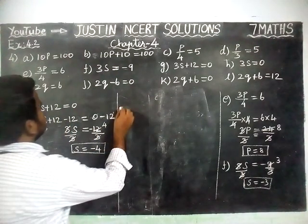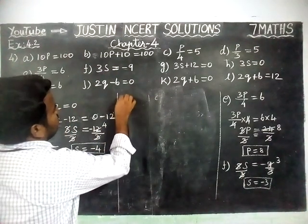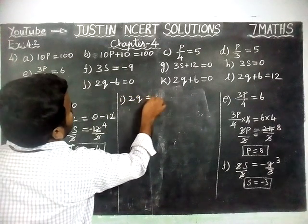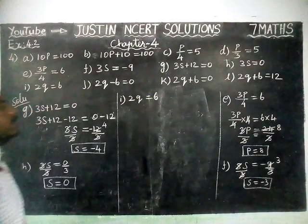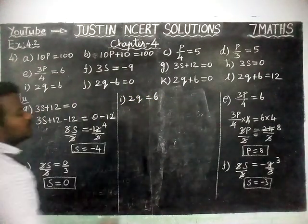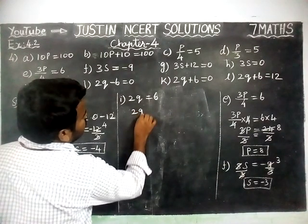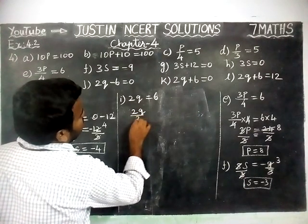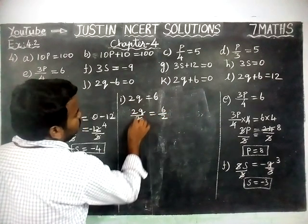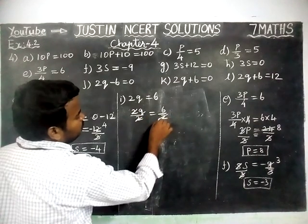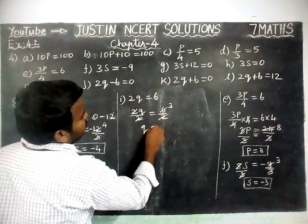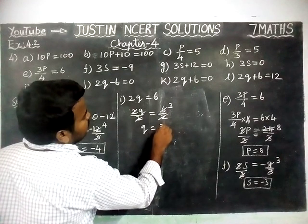Next option I: 2Q is equal to 6. We are going to divide 2 on both sides. 2Q divided by 2 is equal to 6 divided by 2. 2, 2 gets cancelled. 1 two is 2, 3 twos are 6. So, Q is equal to 3.